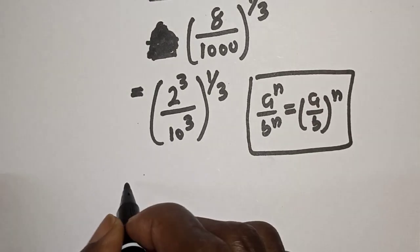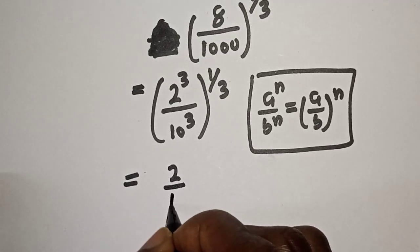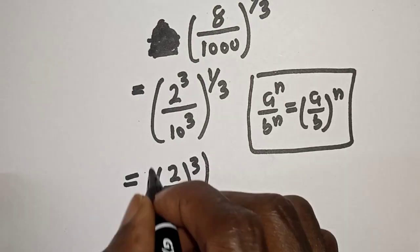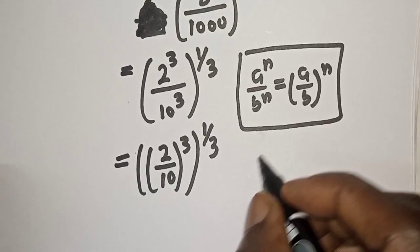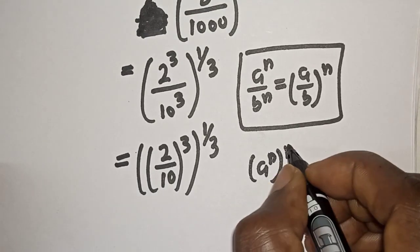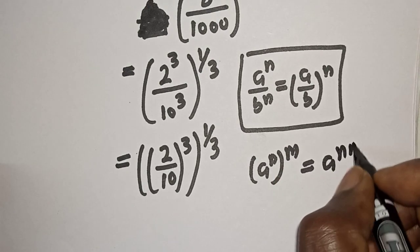Then this is equal to 2 over 10, all raised to power 3, raised to power 1 over 3. Then also take note of this: if you have a raised to power n to the power of m, it is equal to a raised to power n times m.